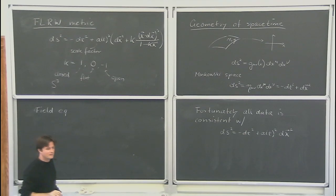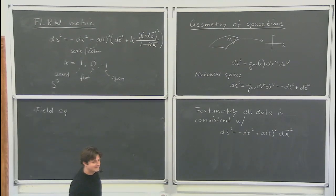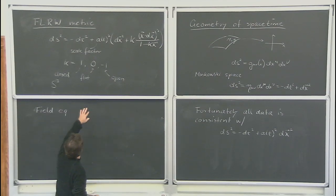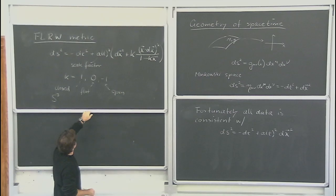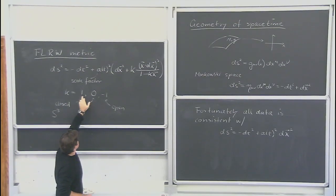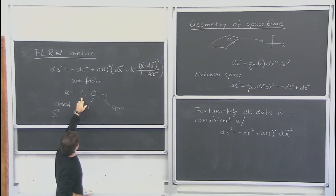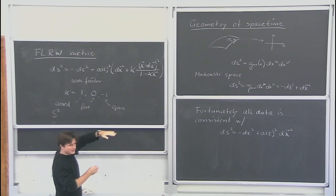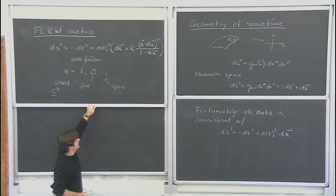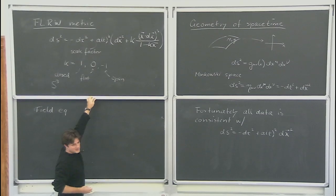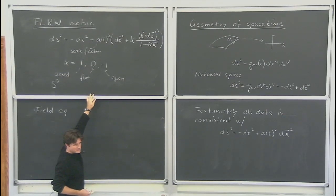There's a quick question: you're saying k is zero? Yes. The data constrains it to be flat to within roughly a percent — maybe half a percent if you take CMB plus BAO data. It's written in a way that looks discrete, but you constrain it by comparing the curvature energy density, which goes like k/a², to the other energy densities.